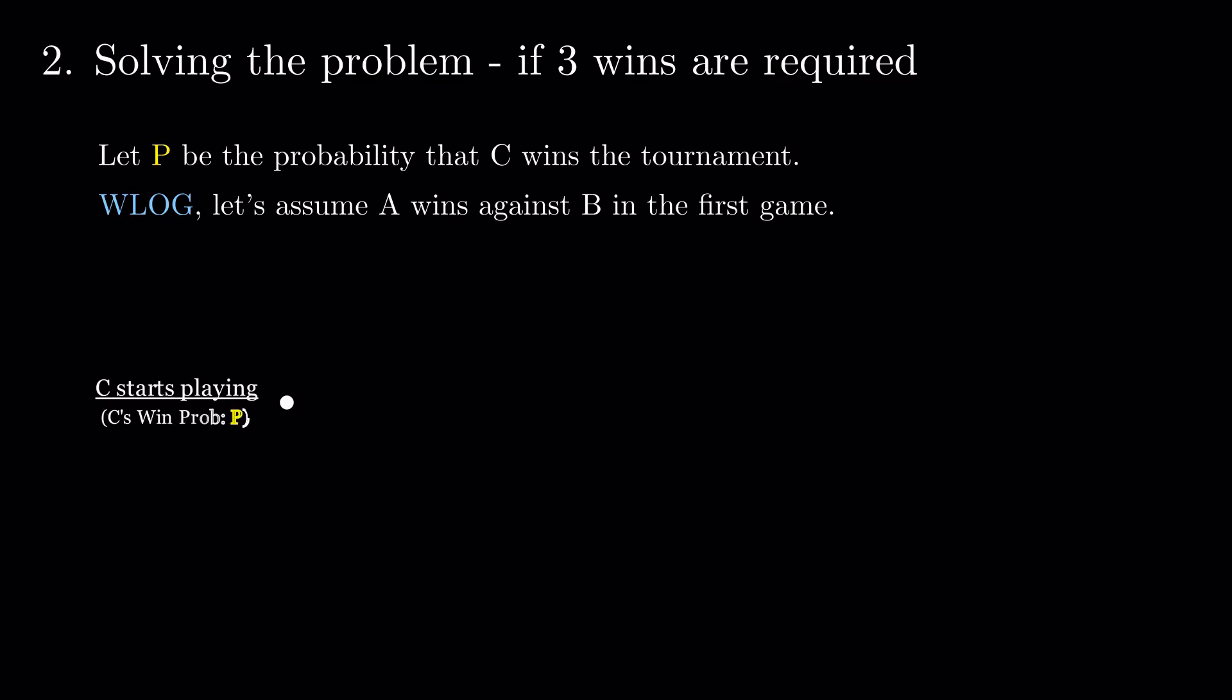Let's take a look at what happens if you require 3 consecutive wins to win the tournament. With the same assumption about the first game as before, consider the possible outcomes. A wins the game against C, and then the next one, and he becomes the winner. Or, he loses the second game to B. And then B, having won one game, plays against C. This is the same situation like the one we started from.